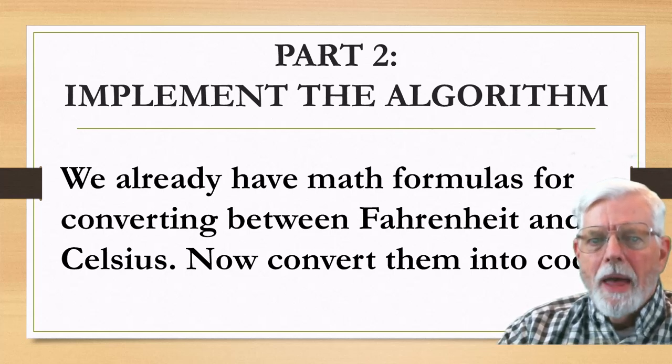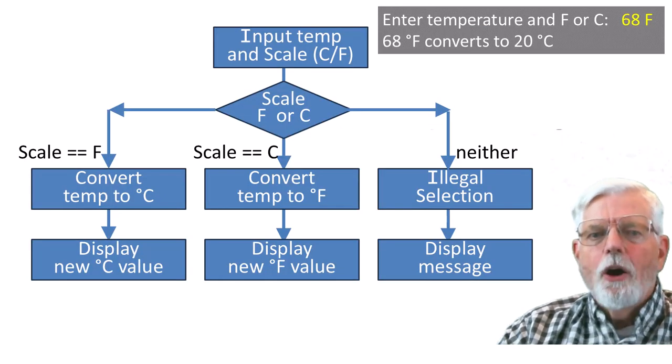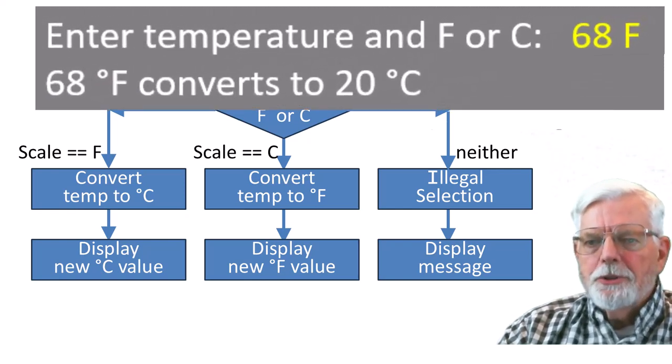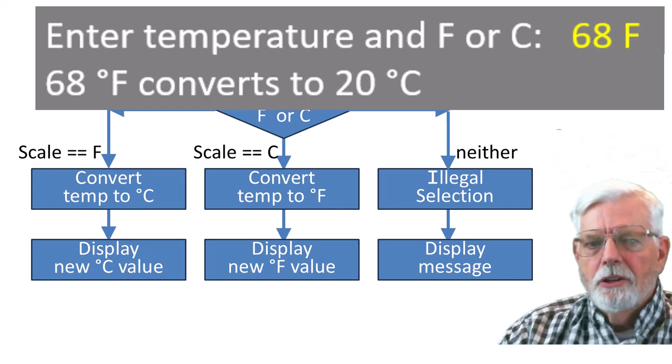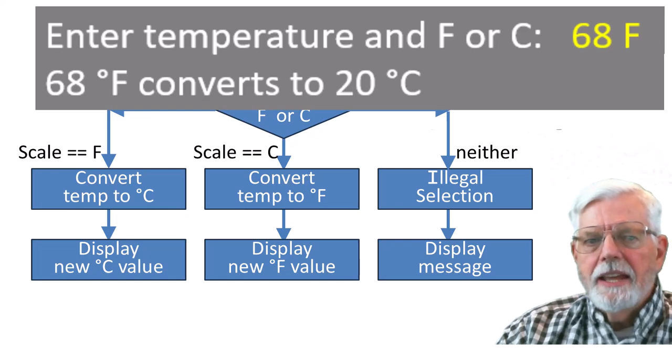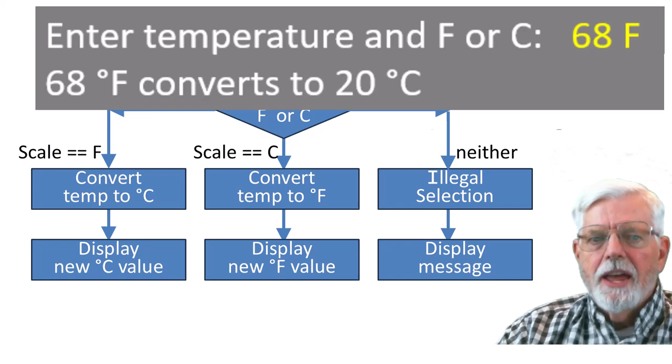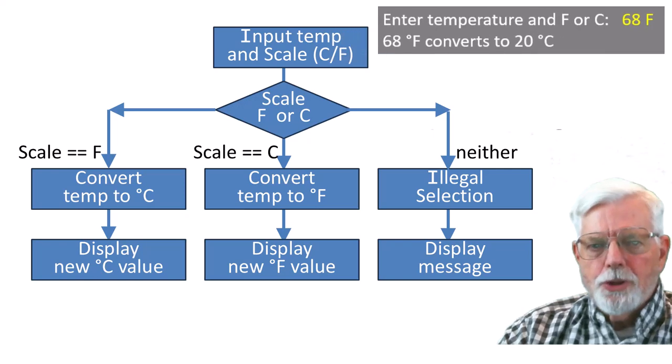We already have math formulas for converting between Fahrenheit and Celsius. Now convert them into code. This is how I want the program to work. The program displays a prompt message. Enter temperature and F or C. Then it reads the temperature and either an F or C to select either Fahrenheit or Celsius scale. For example, if the user enters 68F, the program computes the equivalent temperature in Celsius and then displays both temperatures in Fahrenheit and Celsius.